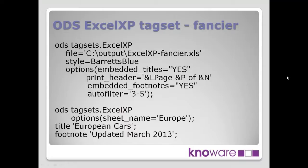This is an example where we use some of the other options to make a much fancier output. The bones are still the same — we've got our ODS tagsets.xlxp, writing to the file, using the Barrettt's Blue style. But this options code is now different; there's a whole raft of things we can do. The first one is embedded titles equals yes. You may have noticed on the previous Excel spreadsheet that the title hadn't come through — that's the default. We can overwrite that and say yes, we want the title on that.